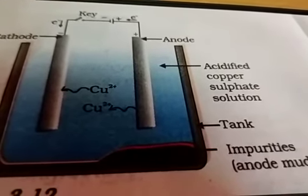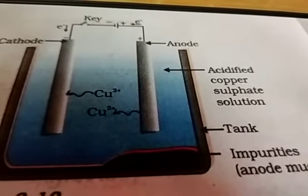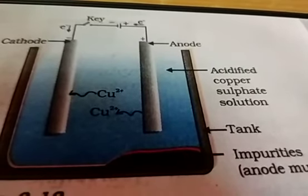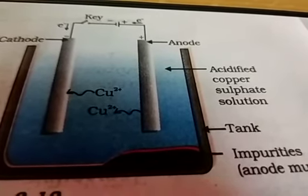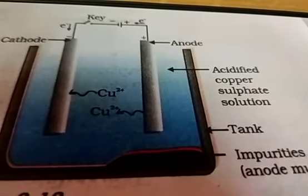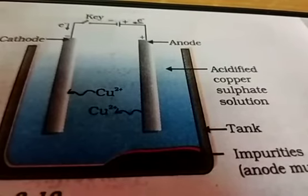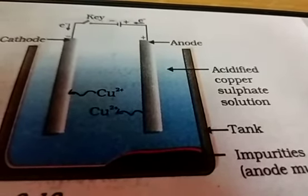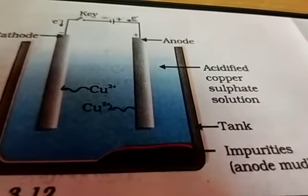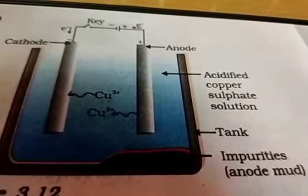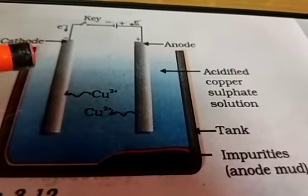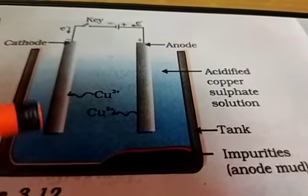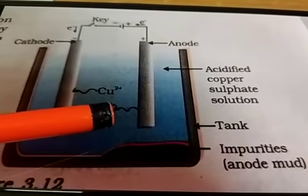For example, if I want copper, I should take a copper strip as the anode and make a copper sulfate solution as the electrolyte. The apparatus is set up as shown in the figure. On passing current through the electrolyte, the pure metal from the anode dissolves into the electrolyte, and an equivalent amount of pure copper is deposited on the cathode rod.